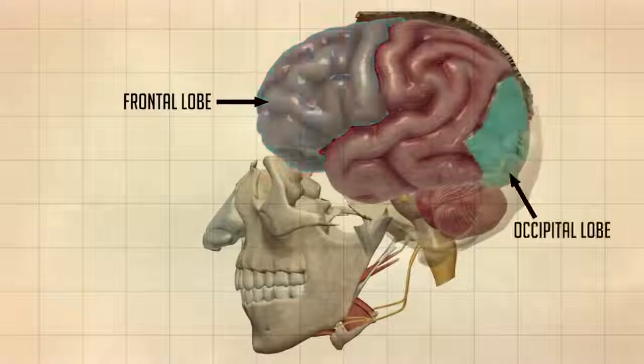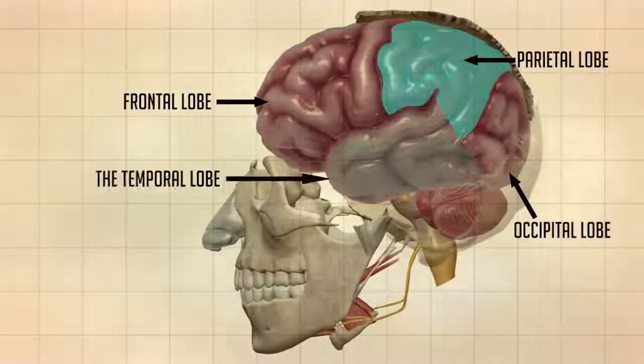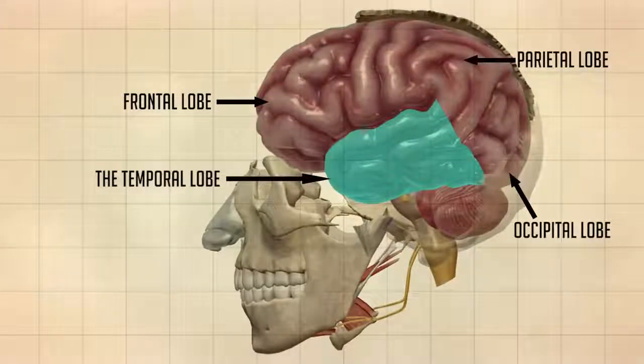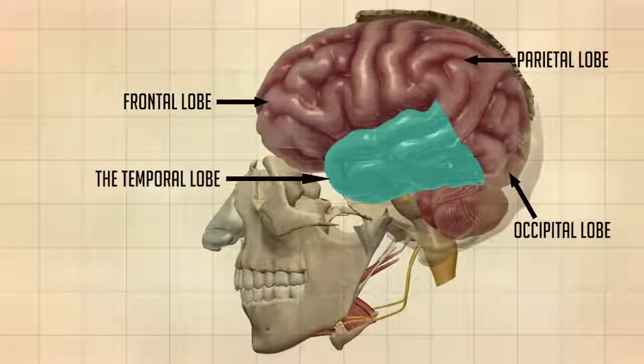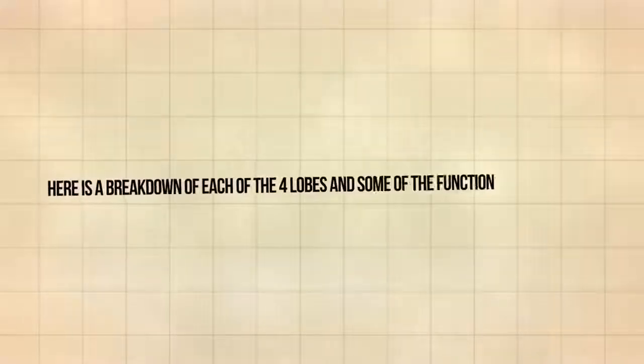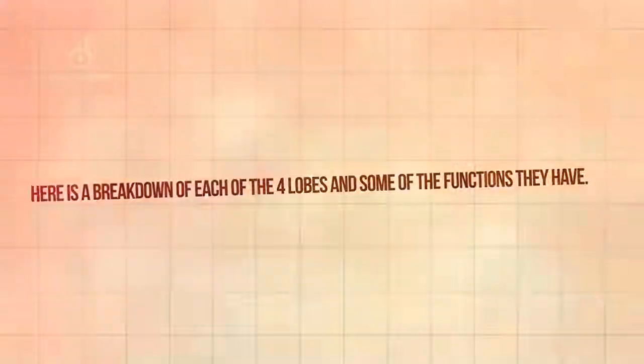The frontal lobe, the occipital lobe, the parietal lobe, and the temporal lobe have different locations and functions that support the response and actions of the human body. Here is a breakdown of each of the four lobes and some of the functions they have.